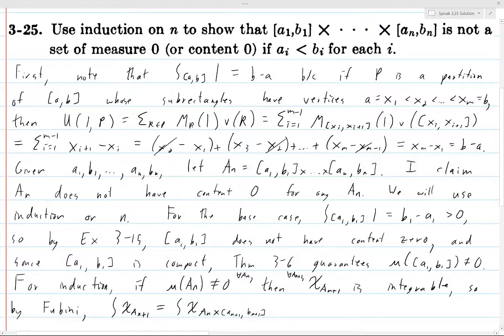Okay, so by Fubini, this integral equals this integral. Now in the next stage, we're actually applying Fubini. And so basically what we're doing is we're doing the integral of χ_{Aₙ} integral on [aₙ₊₁,bₙ₊₁]. And we're just integrating the function 1 here.